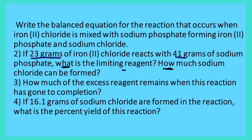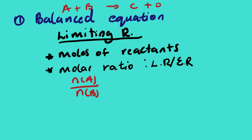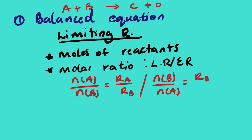The question also asks how much sodium chloride can be formed. For the molar ratio approach to find product quantity: n(product) / n(limiting reagent) = ratio of product / ratio of limiting reagent. The substance you are looking for should be on the numerator. Using a general equation A + B → C + D: n(C)/n(A) = R(C)/R(A), where R denotes the stoichiometric ratio from the balanced equation.